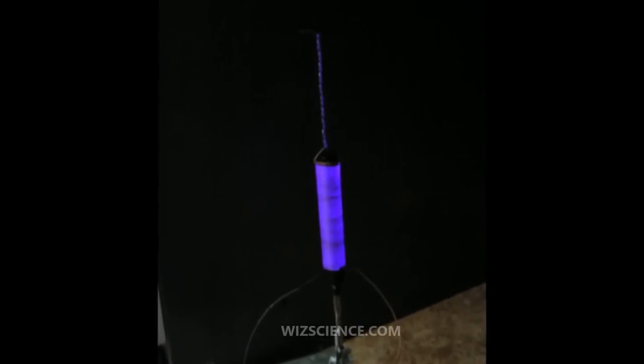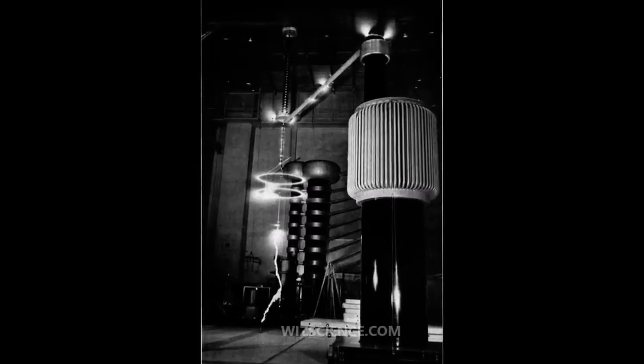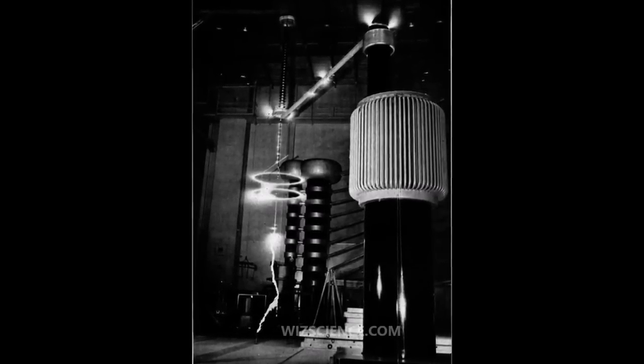It is often seen as a bluish glow in the air adjacent to pointed metal conductors carrying high voltages and emits light by the same property as a gas discharge lamp.